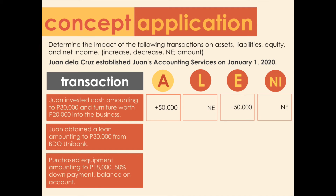Transaction two: Juan obtained a loan of 30,000 pesos from BDO Unibank. This increases assets by 30,000 and also increases liabilities by the same amount.